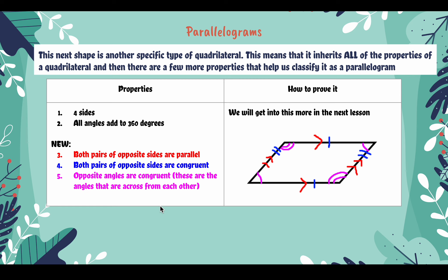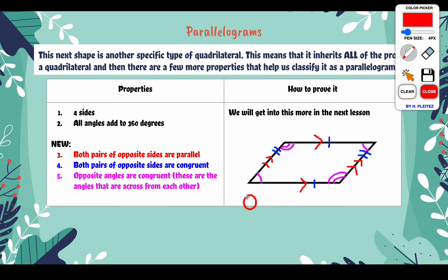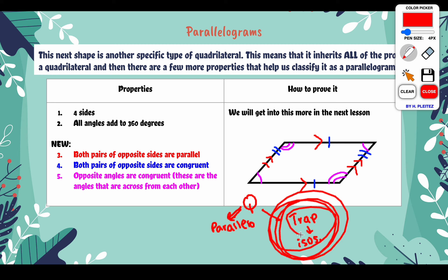This next shape we're working with is a different type of quadrilateral. Quadrilaterals are at the very top of our family tree. We did trapezoids, and under trapezoids we had isosceles trapezoids, but now we're going off the trapezoid path. We have a parallelogram as another type of quadrilateral, so parallelograms really have nothing to do with trapezoids — it's going down its own path.